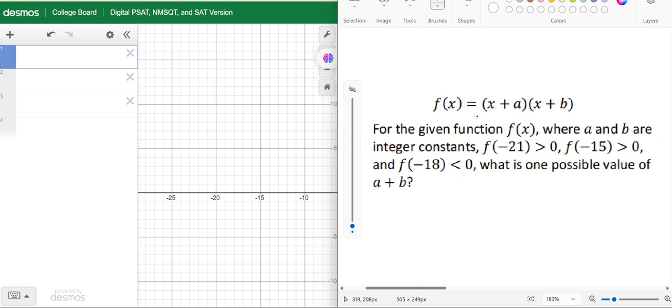We have a function f(x) which is (x + a) times (x + b) where a and b are integer constants. f(-21) is greater than 0, f(-15) is greater than 0, and f(-18) is less than 0. What is one possible value of a plus b? In this type of question, we have to notice that there may be many possible values of a plus b, but we only need one value. Let's get started.